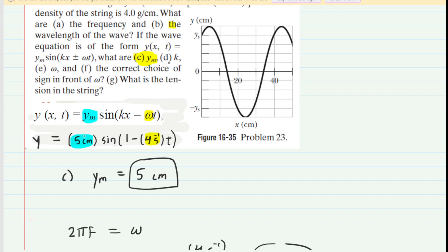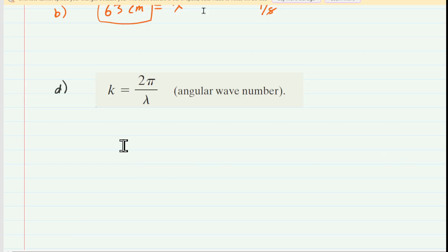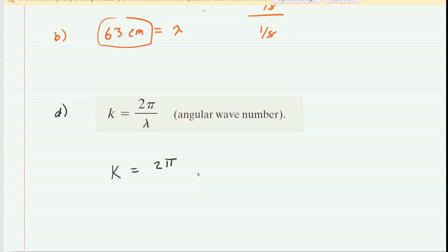In part d, we need k, the so-called angular wave number. That will be a relatively straightforward endeavor, because the angular wave number is 2π divided by the wavelength. We just figured out the wavelength was roughly 63, and that was in centimeters. When you plug this in, you should get 0.1. The unit would be radians, because the 2π is in radians, divided by centimeters. This is the correct answer to part d.